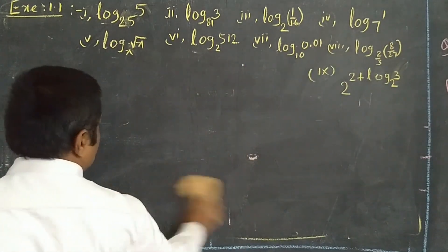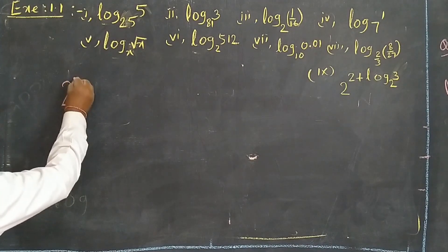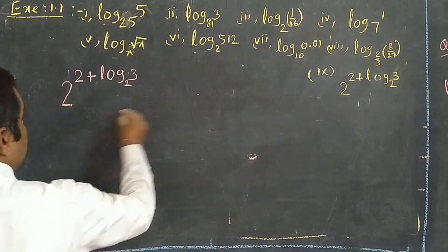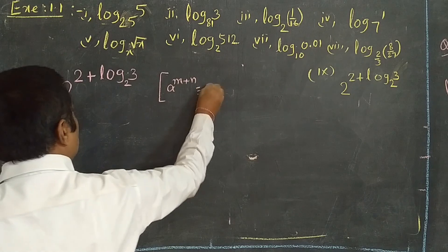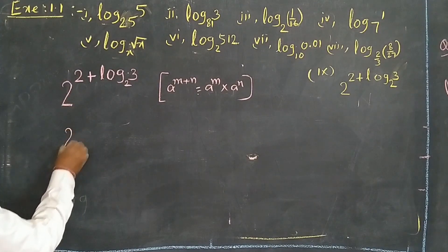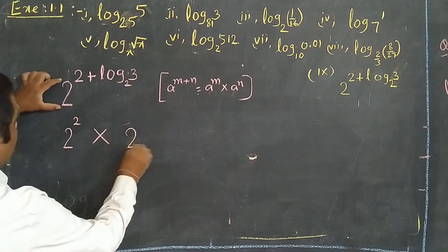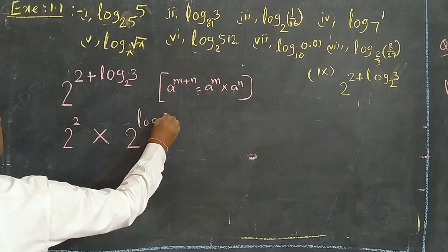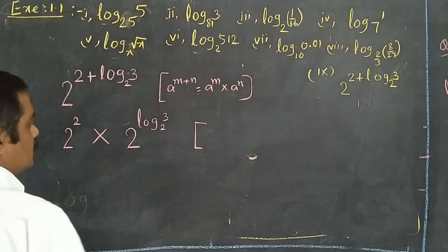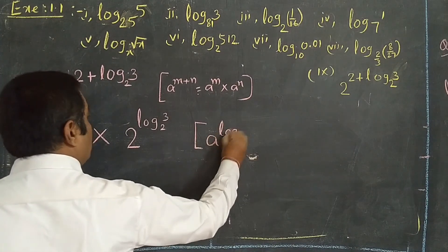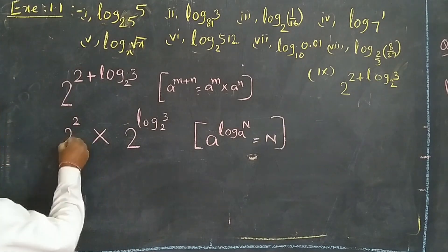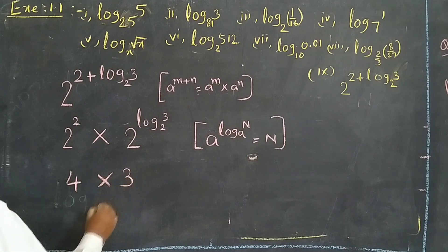Now the ninth question: 2^(2 + log₃ base 2). This looks like the algebraic formula a^(m+n). We can write it as 2² × 2^(log₃ base 2). There is a rule: a^(log_n base a) = n. So 2^(log₃ base 2) = 3. Therefore the answer is 2² × 3 = 4 × 3 = 12.